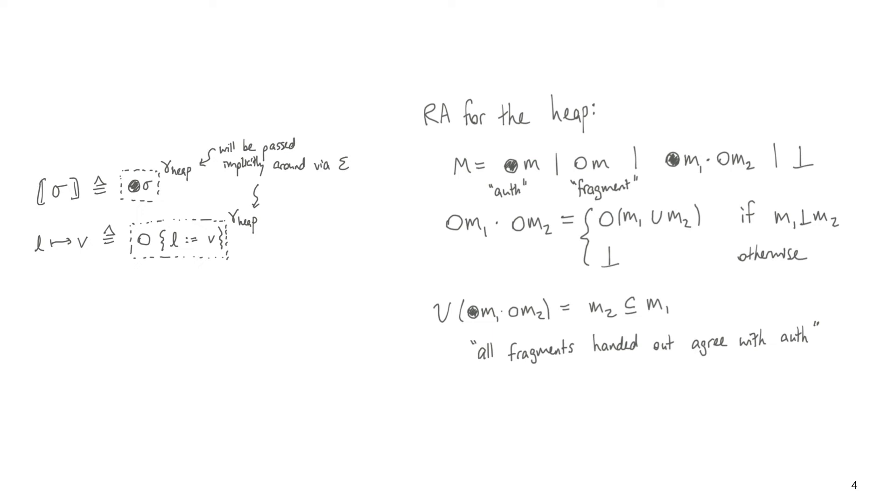The fragments, on the other hand, are going to be owned by threads. And while auth elements don't compose, fragments do. So two map fragments compose into their union if the maps are disjoint, and otherwise the composition returns some bottom element which is invalid.